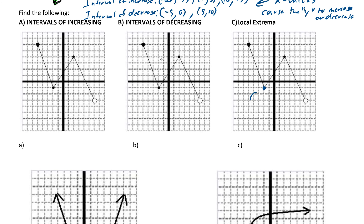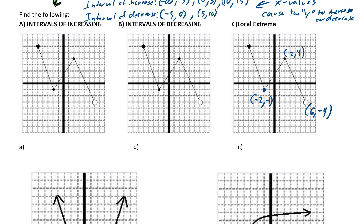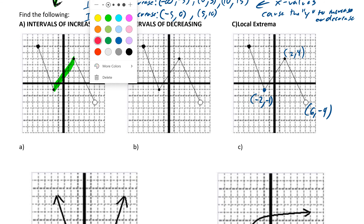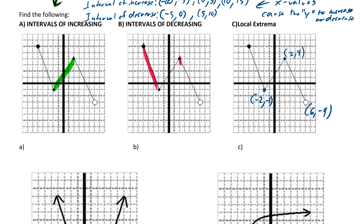If we label these extrema — and these are rough points, this is a rough graph — we can see the key coordinates. The graph will increase from one section and then decrease from here to there and here to there. It's going to go down, down, and up. Remember, you've got to have that left-to-right motion.